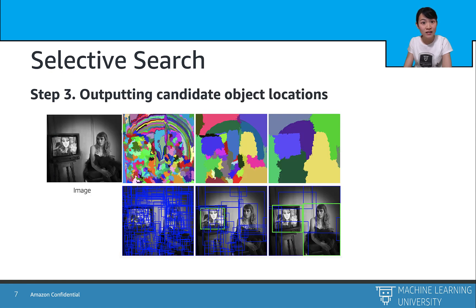The last step, we can output the candidate object bounding boxes for each semantic region. As we can see, the initial segmentation is a bit noisy and it has the most amount of boxes. As we combine the similar regions together, we can reach an ideal number of semantic regions and crop the bounding box for each region.